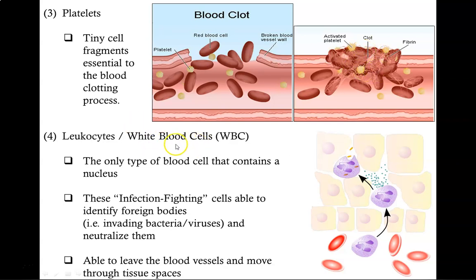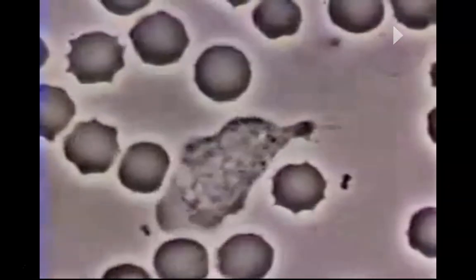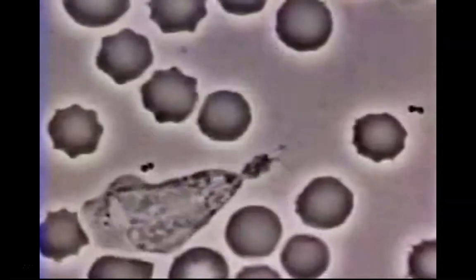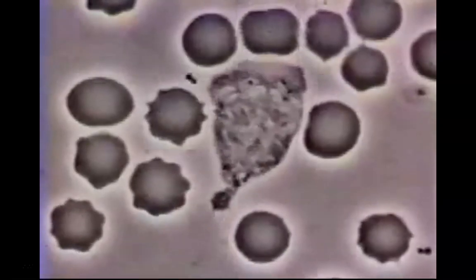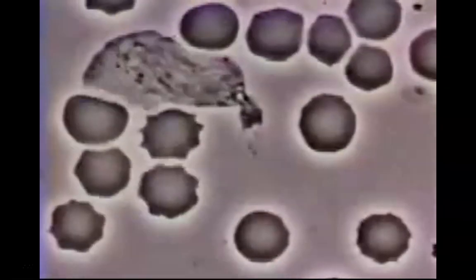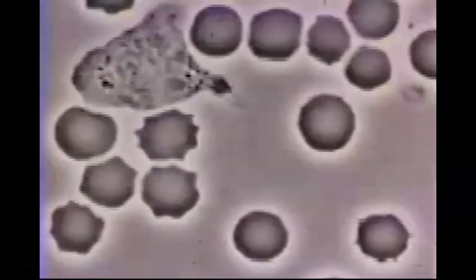White blood cells, also known as leukocytes, are the only type of blood cell that contains a nucleus. These infection-fighting cells are able to identify foreign bodies, such as invading bacteria or viruses, and neutralize them. Furthermore, they are the only type of cells that can leave the blood vessels, squeezing in between other cells in order to fight an infection. This is a video of a white blood cell chasing after a bacteria — it is squeezing in between other cells in order to get to it. And when it does capture it, it surrounds and engulfs it. Once the bacteria is captured, the lysosomes inside release their digestive enzymes and destroy and break down the bacteria.